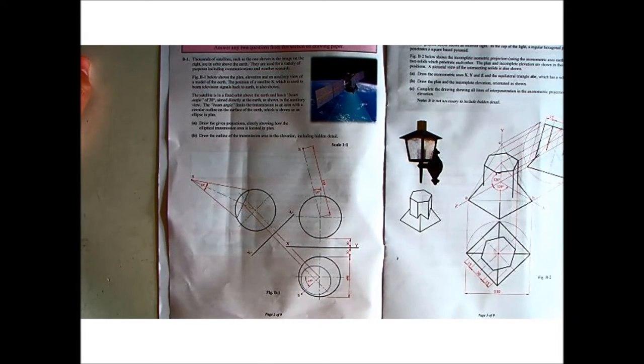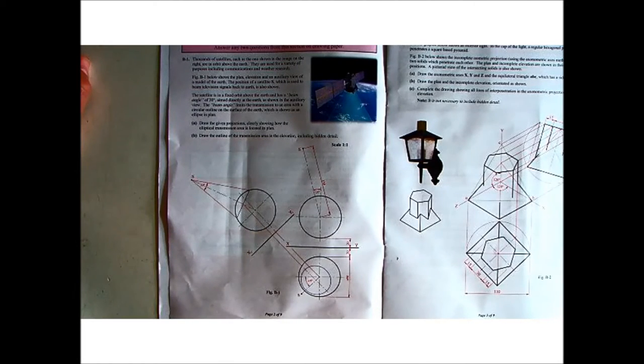Ok, so as always, read through it. A thousand satellites, such as the one shown in the image on the right, are in orbit above the Earth, used in a variety of purposes including communications and weather research. Figure B1 below shows the plan, elevation and auxiliary view of a model of the Earth. The position of satellite S, which is used to beam television signals back to the Earth, is also shown. The satellite is in a fixed orbit above the Earth and has a beam angle of 30 degrees, aimed directly at the Earth, as shown in the auxiliary view. The beam angle limits the transmission to an area with a circular outline on the surface of the Earth, which is shown as an ellipse in plan.